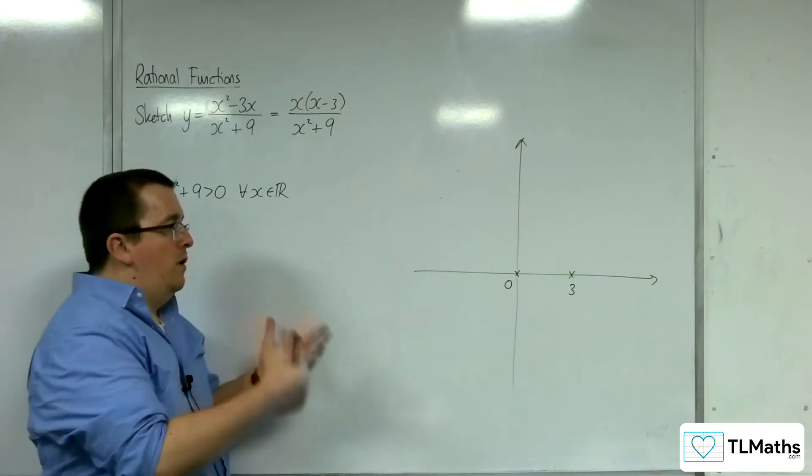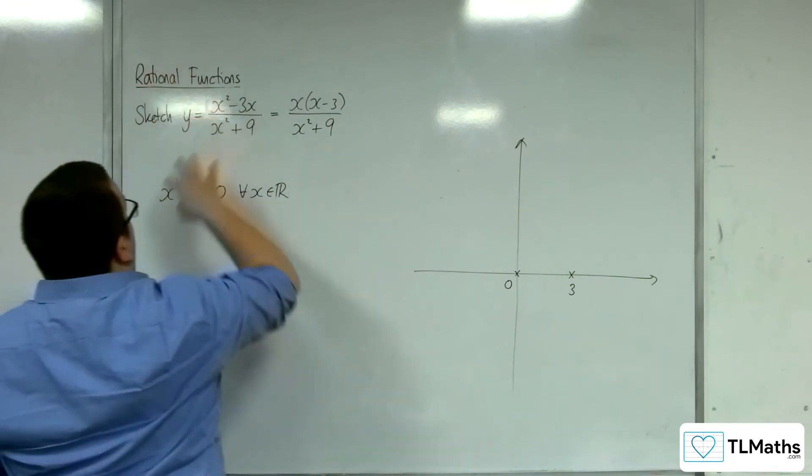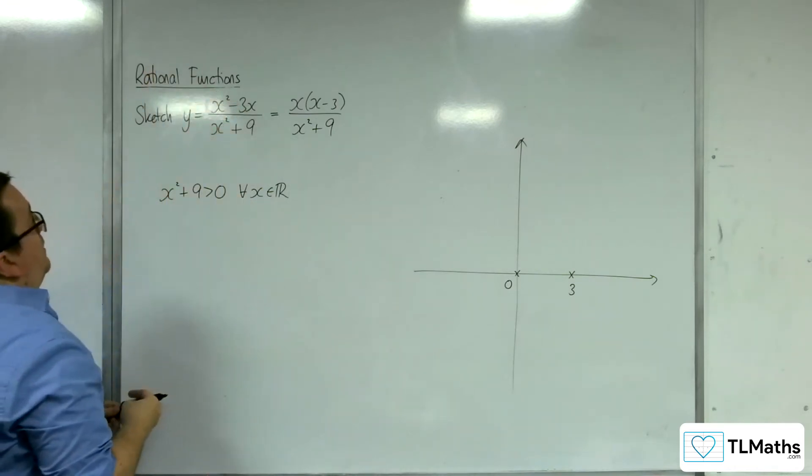Okay, so we've got that. Right, how about a horizontal asymptote? Well, the order of the numerator and denominator is the same, so that should be fine.